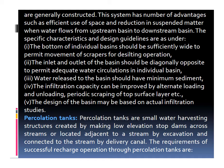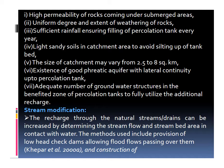The next structure is the percolation tank. Percolation tanks are small water harvesting structures created by making low earthen embankments across streams, or located adjacent to a stream by excavation and connected to the stream by a delivery canal. The requirements for successful recharge through percolation tanks include: high permeability of rocks under the tank area, uniform degree and extent of weathering of rocks, sufficient rainfall ensuring filling of percolation tanks every year, light soils in the catchment area to avoid silting of tank beds. The size of the catchment may vary from 2.5 to 8 km². There should be existence of a good phreatic aquifer with lateral continuity up to the percolation tank, and an adequate number of groundwater structures in the benefited zone of the percolation tank to fully utilize the additional recharge.